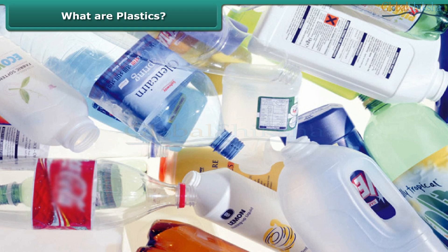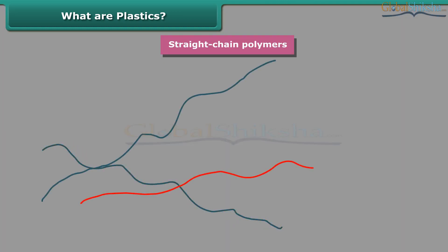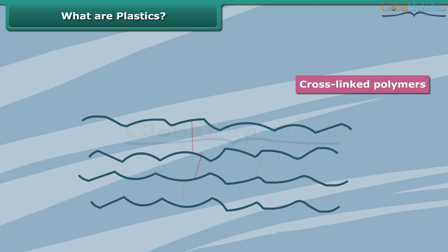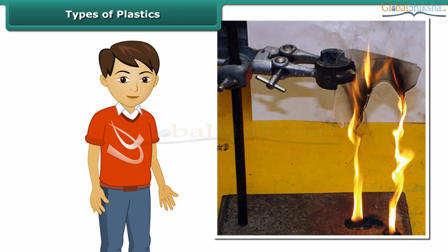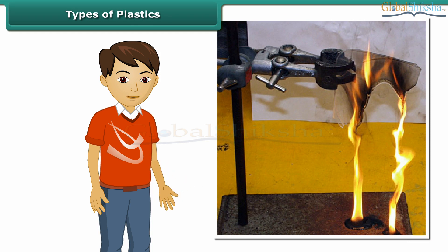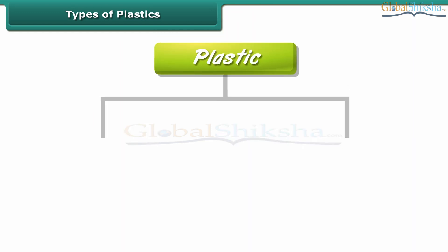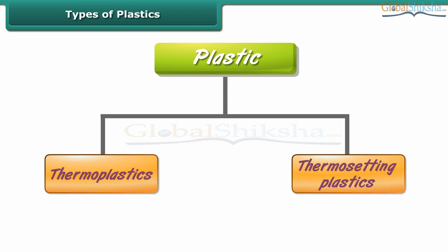No. Some plastics have a linear arrangement whereas others are cross-linked. Have you ever observed what happens when a polythene bag is burnt? Yes, it melts and you can see its droplets falling off, apart from the noxious smell it produces. Do all plastics melt upon burning? There are two types of plastics based on their reaction upon being heated: these are thermoplastics and thermosetting plastics.